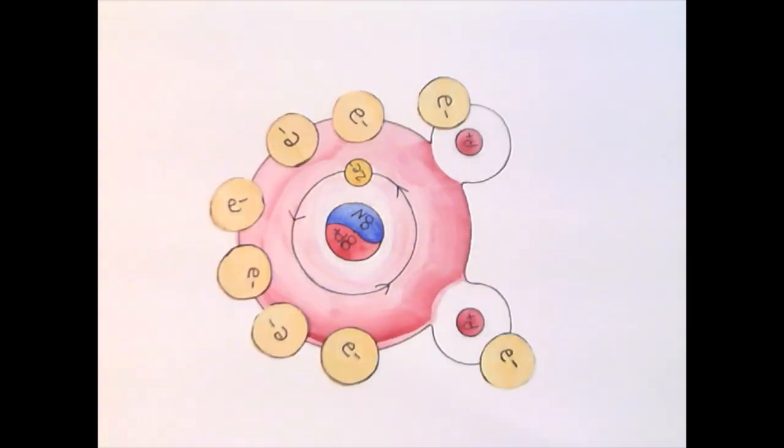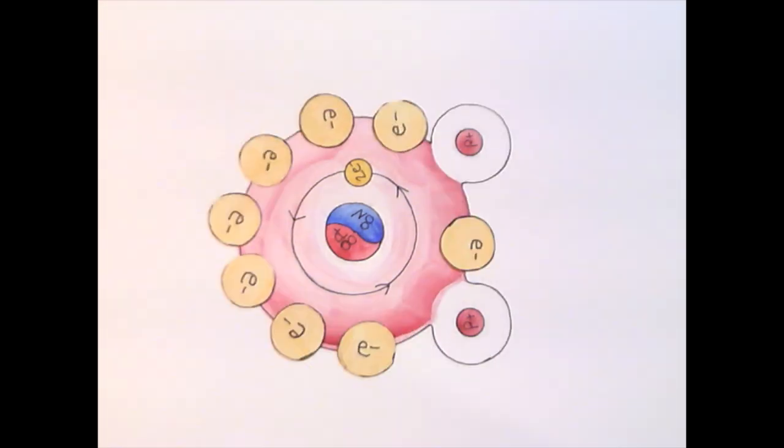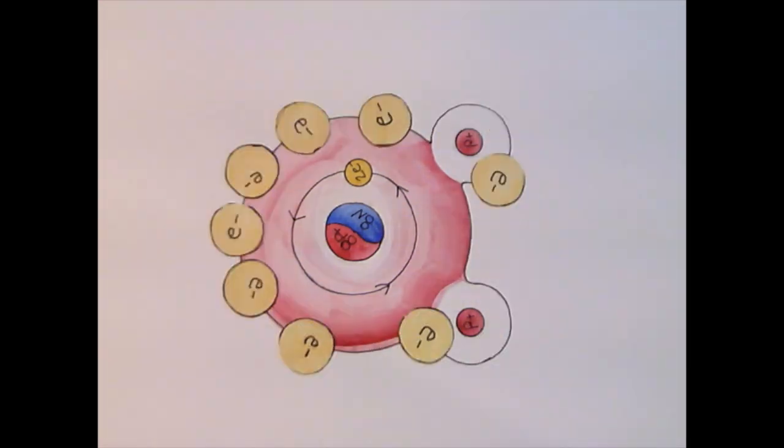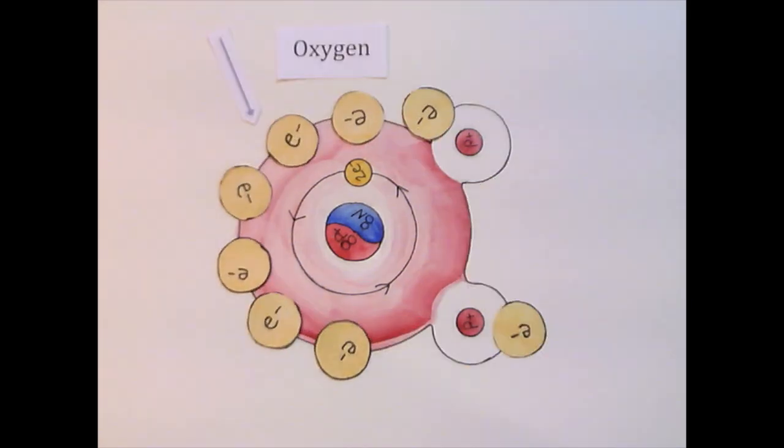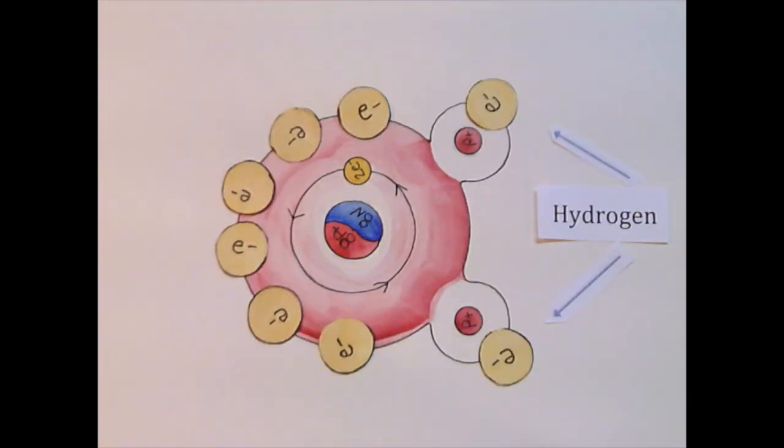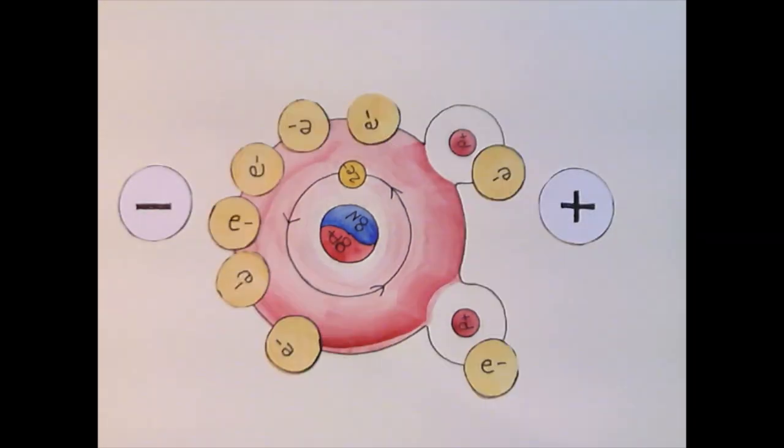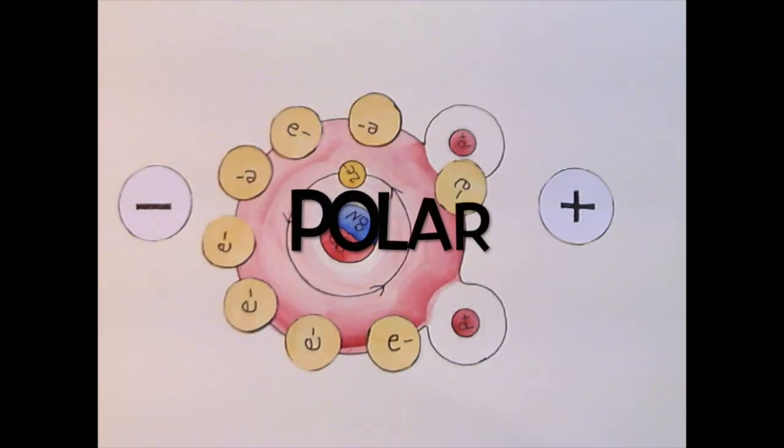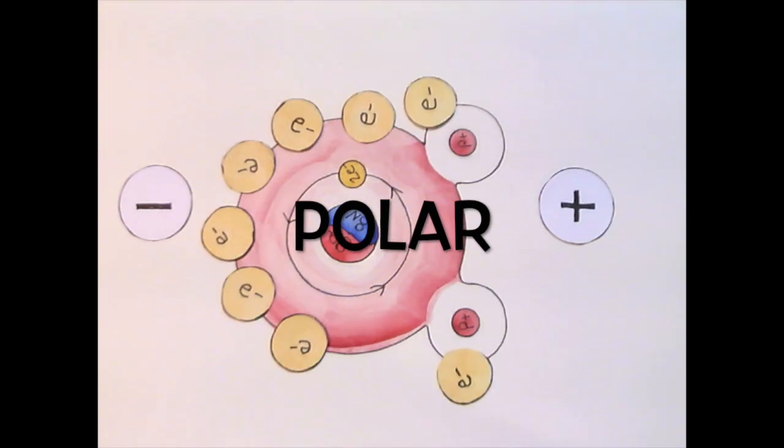Oxygen takes the electrons most often, so it becomes the negative side of the molecule. Hydrogen becomes positive because it has the electrons least often. Water is extremely polar. It has a positive and a negative side.